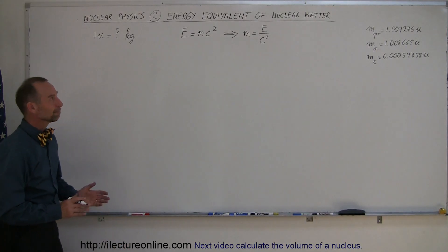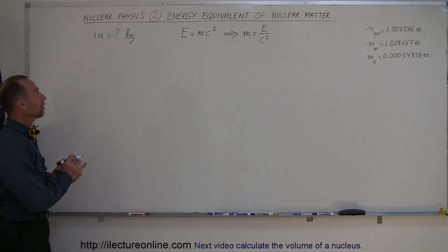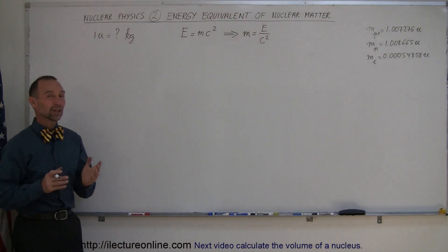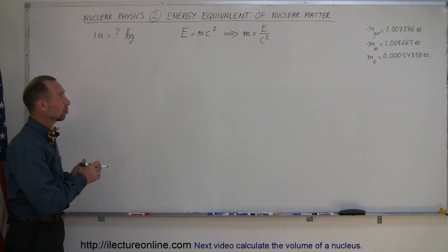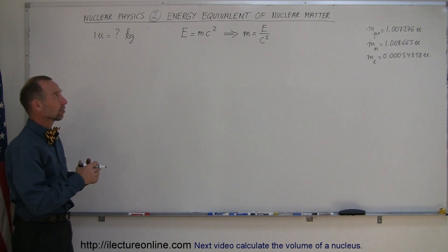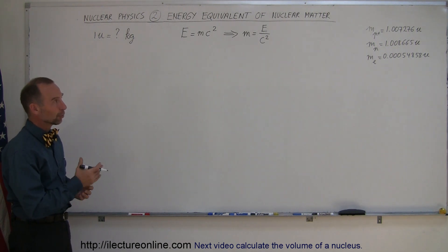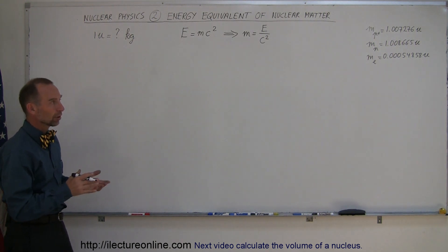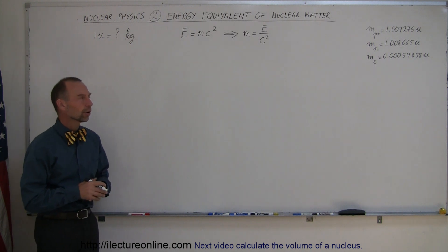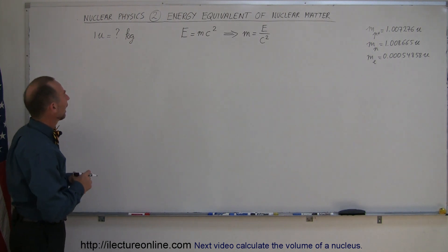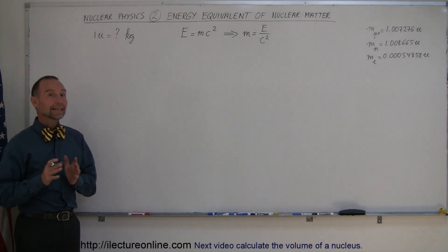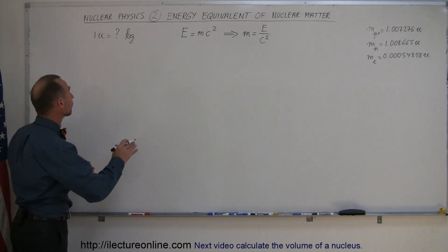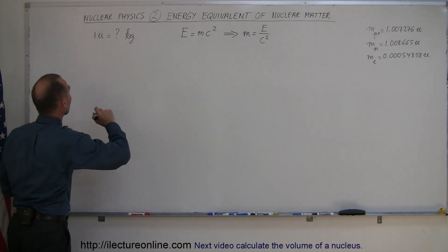Welcome to ElectronLine, and our second video on nuclear physics, still dealing with mass and the understanding of mass equivalent of nuclear matter — for example, protons, neutrons, electrons, and so forth. First of all, we're going to look at the equivalence of atomic mass units in kilograms.